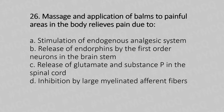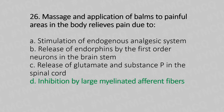Question 26: Massage and application of balms to a painful area in the body relieve the pain due to — Option A: stimulation of the endogenous analgesic system. Option B: release of endorphin by first-order neurons in the brainstem. Option C: release of glutamate and substance P in the spinal cord. Option D: inhibition by large myelinated afferent fibers. The answer is Option D: inhibition by large myelinated afferent fibers.